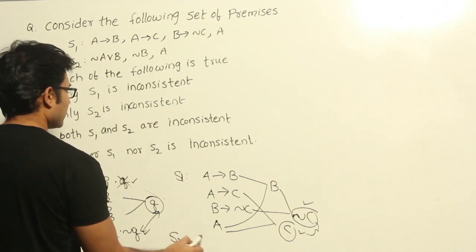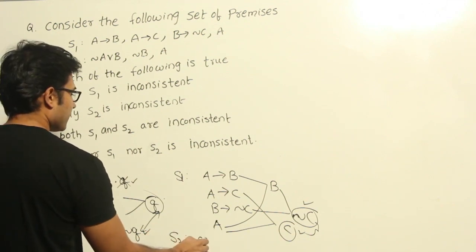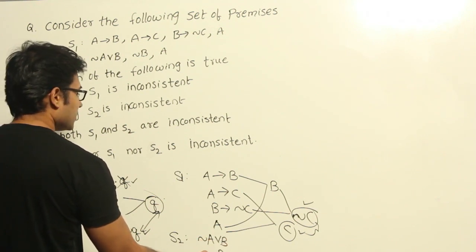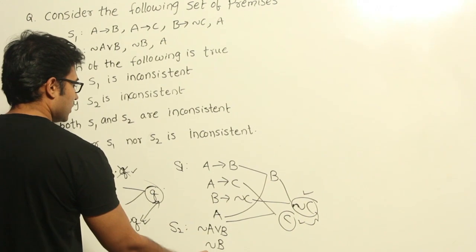Now let's look at S2. Now if you look at S2, the premises given are negation A or B, negation B, and A.